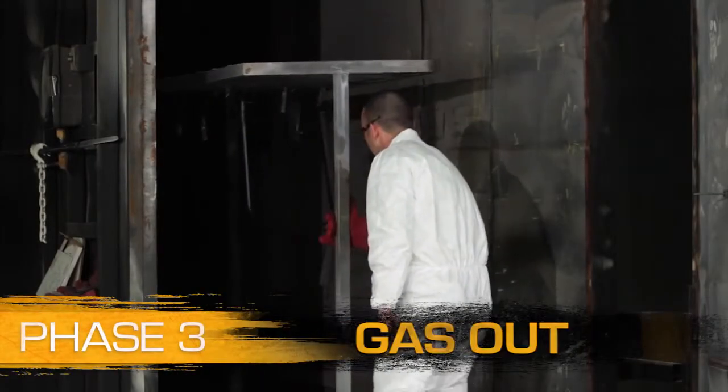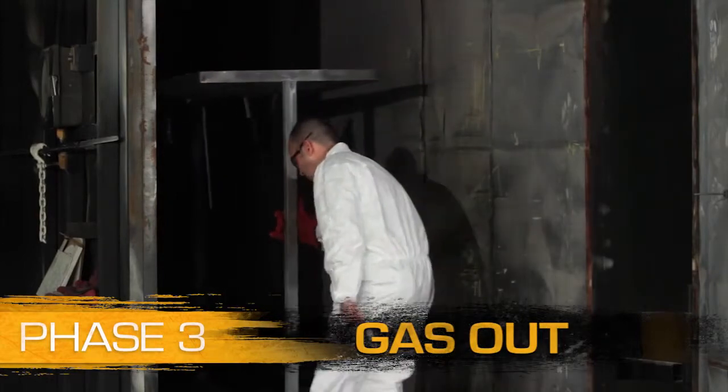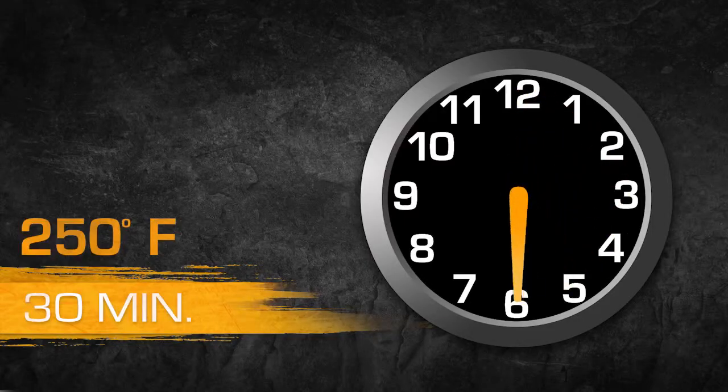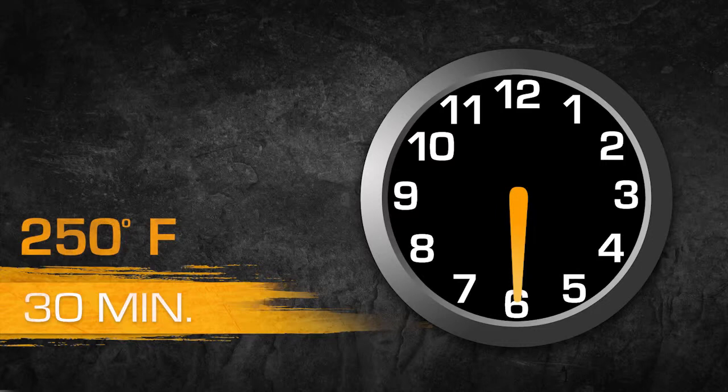Phase 3. Gas-out. It is recommended, but not required, to heat the parts in an oven at 250 degrees Fahrenheit for approximately 30 minutes. This will evaporate and burn off any remaining moisture and oils.